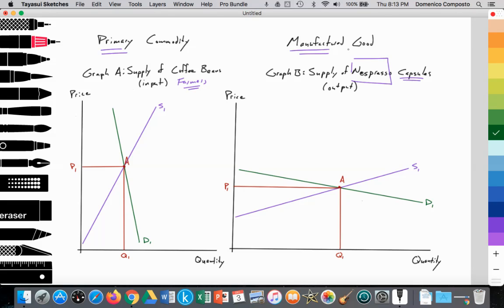Now in manufactured markets, we see that this is very different. This is an output market, different from the input market. In the output market, the supply is provided by firms and the demand is coming from households. And we notice that the supply by Nespresso is very elastic. Why?